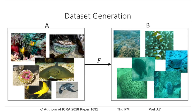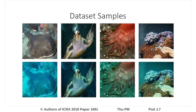The result is paired samples which we can use for supervised image-to-image translation. Here, we show examples from our training set. The top row corresponds to real images taken from ImageNet, and the bottom row corresponds to those images distorted using CycleGAN.